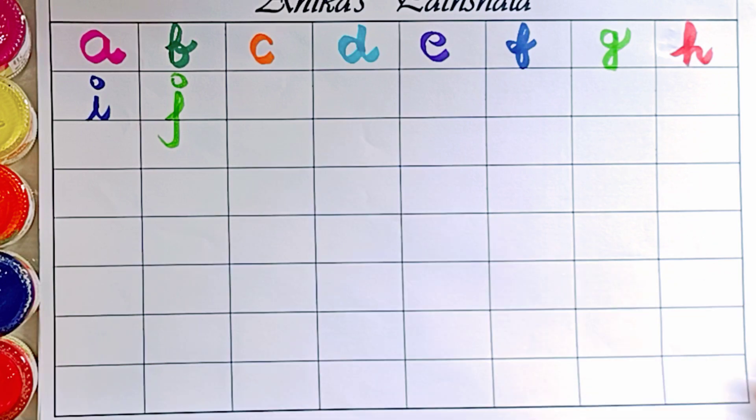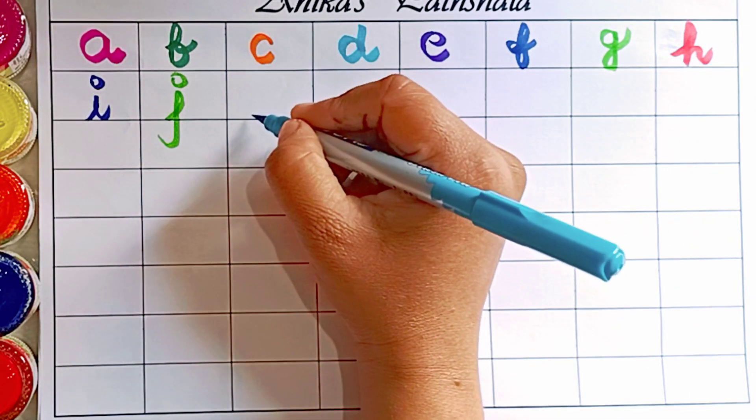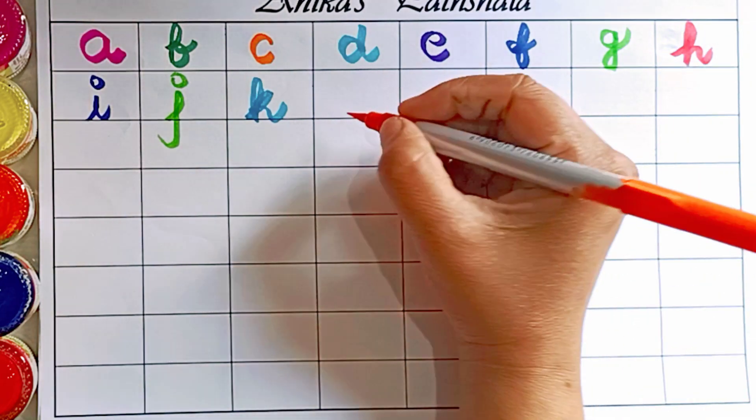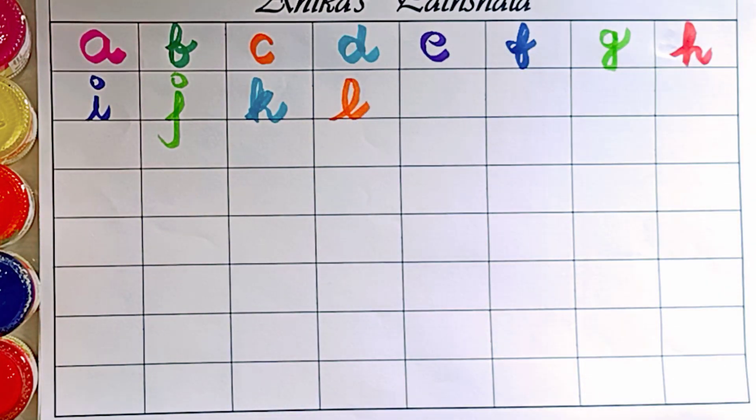J. J is for jug. K. K is for kite. L. L is for lemon.